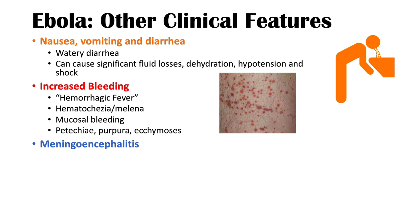Meningoencephalitis — inflammation of the meninges and brain — can also occur, presenting with fever, headache, altered mental status, and stiff neck, typically between days eight to ten.